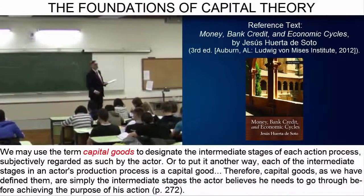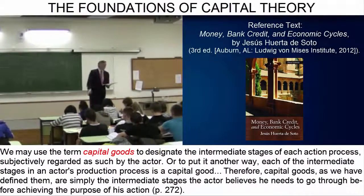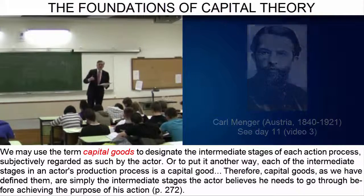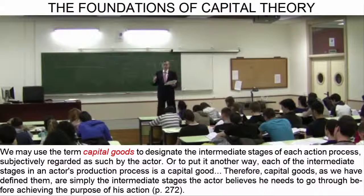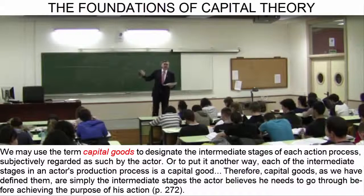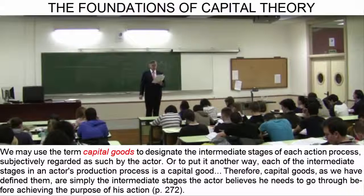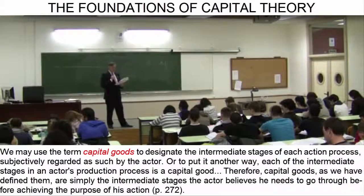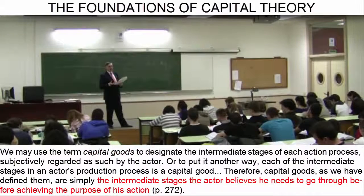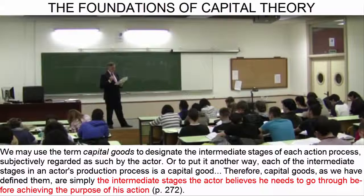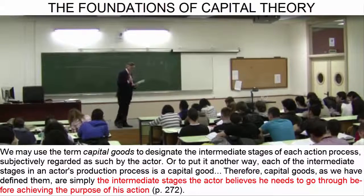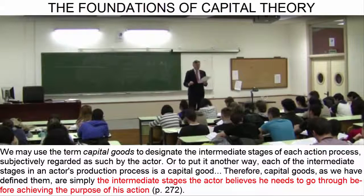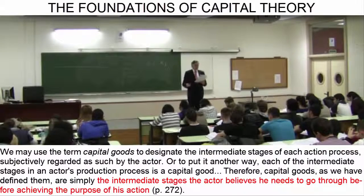We will use the term capital good to refer to each of the higher-order economic goods Carl Menger writes about. In other words, each of the intermediate stages which the actor subjectively views as such and through which he believes he must pass before achieving his much-desired end. From an economic standpoint, it is not the physical essence of a resource which gives it the nature of a capital good, but rather the fact that an actor believes it will help him accomplish or complete one of the stages in his action process.